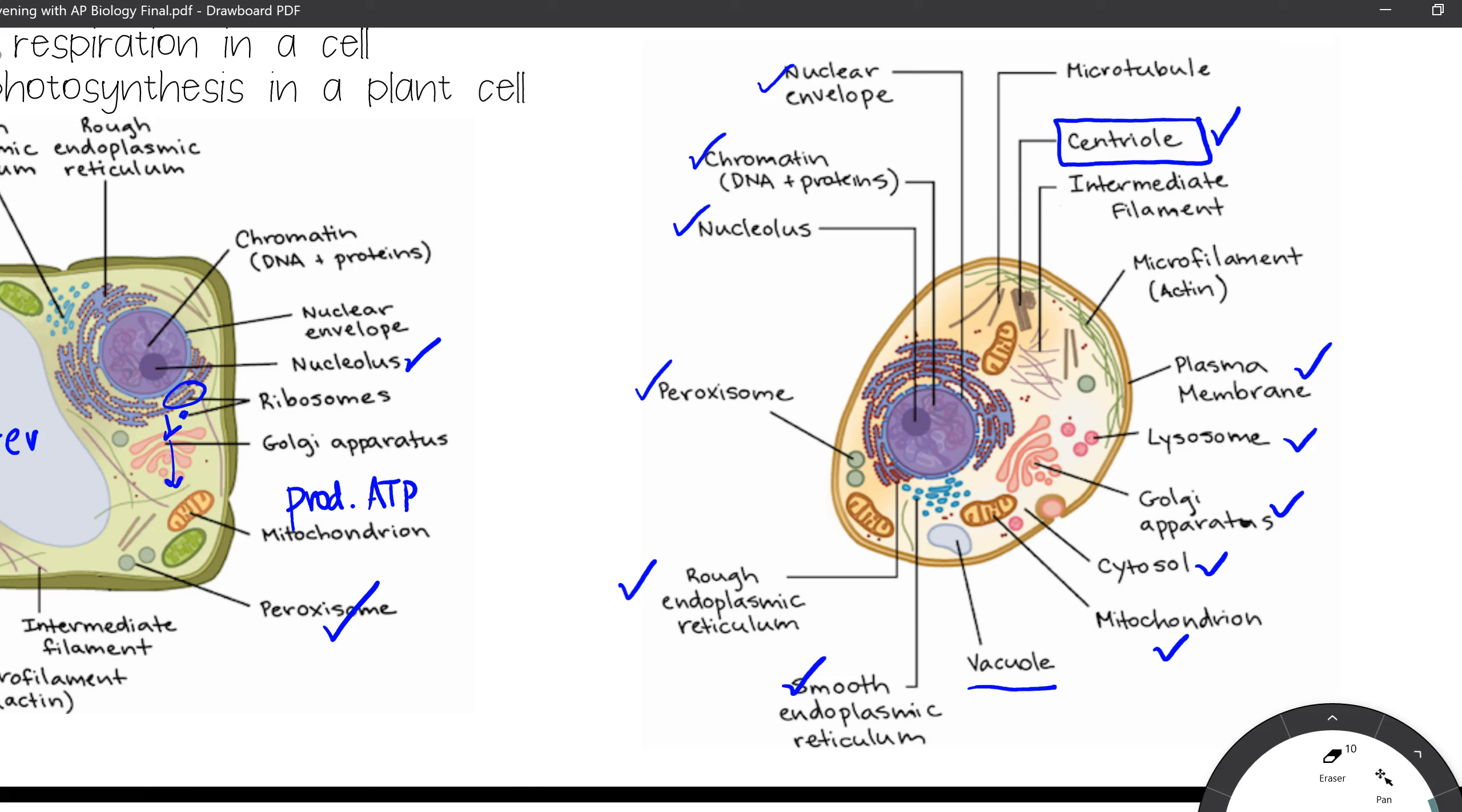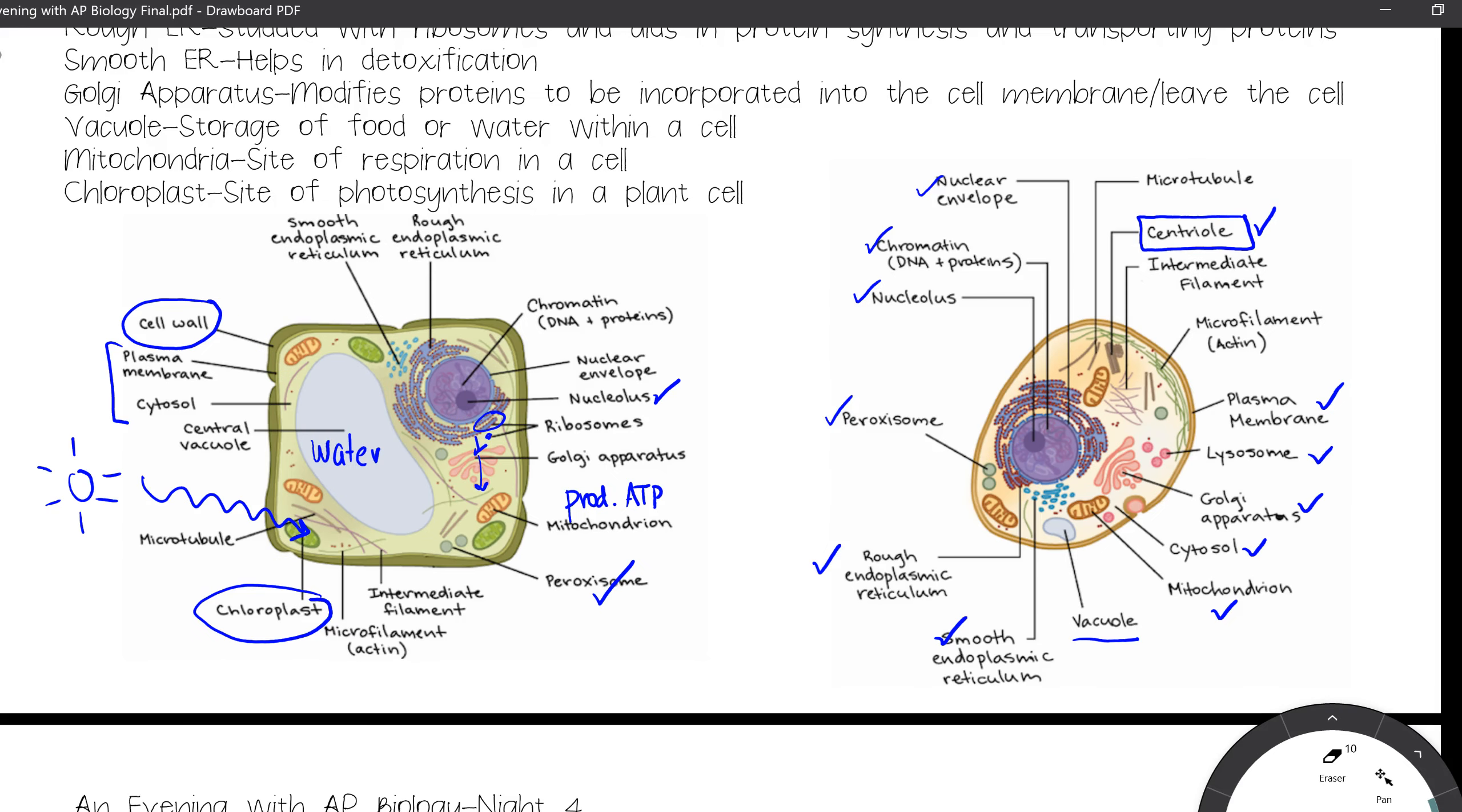That is how plant cells and animal cells are similar, and that is how they are different. So if you look at them next to each other, you can see similarities and differences. So quick recap, prokaryotic cells, simple, no membrane-bound organelles. Eukaryotic cells are more complex. They're going to be able to compartmentalize. They are going to have membrane-bound organelles that are going to do very specific jobs that will help your eukaryotic cell perform its function much more efficiently. So hopefully that was helpful, and we will see you again tomorrow night.